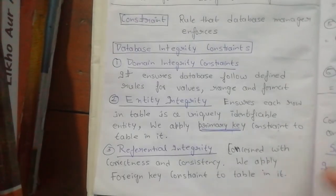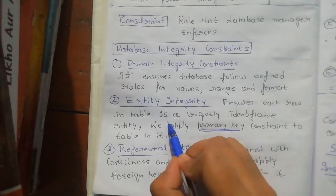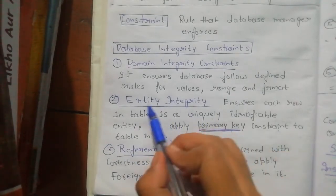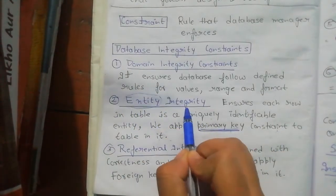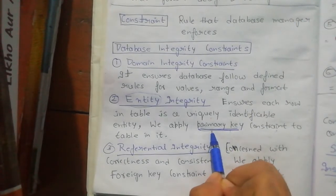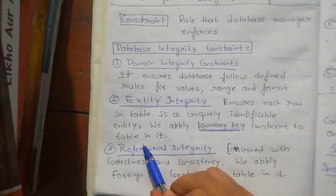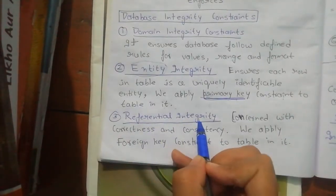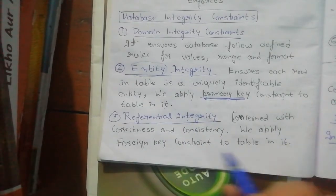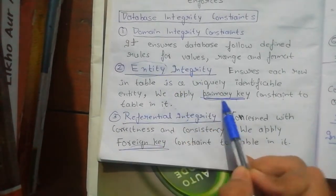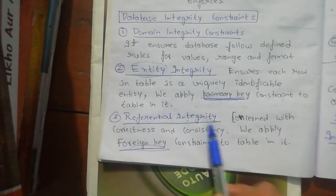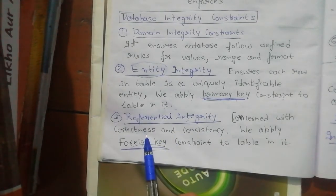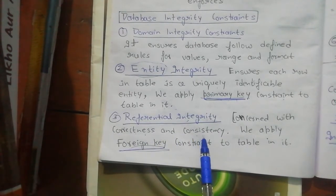Entity integrity ensures each row in a table is uniquely identifiable. We apply the primary key constraint to a table for this. So entity integrity constraint is applied on the primary key. Referential integrity is applied on the foreign key, and it is concerned with the correctness and consistency of our database.